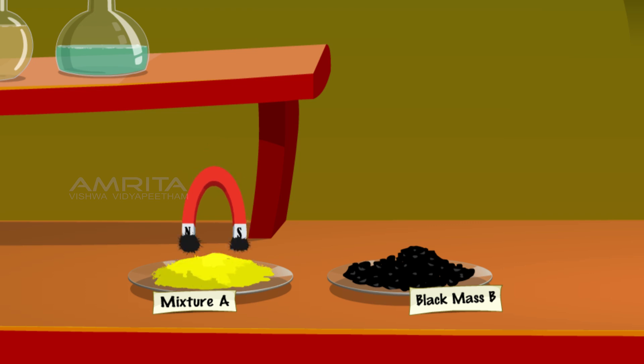Iron fillings cling to the magnet since iron retains its properties. Show the magnet over black mass B. No particles attach to the magnet because iron loses its magnetic properties on forming a compound.